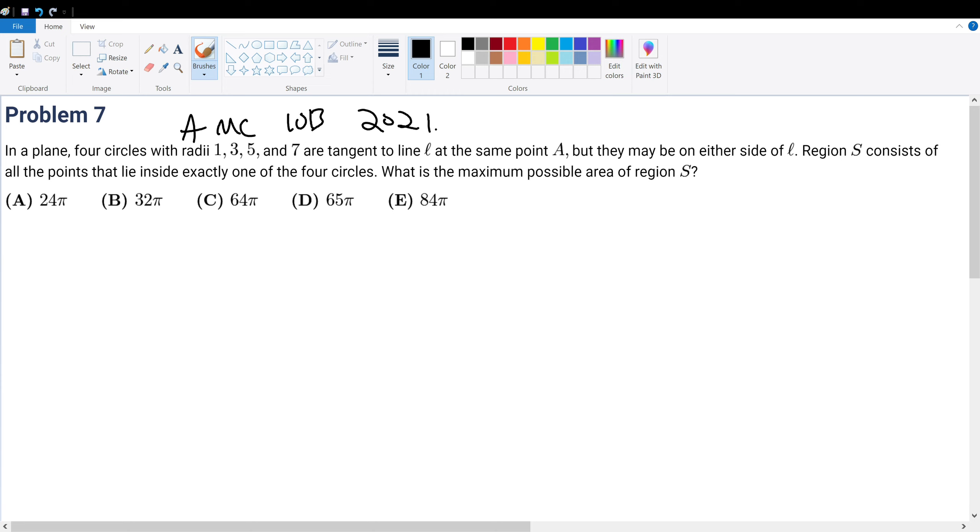AMC 10B 2021, problem 7. In a plane, four circles with radii are tangent to line L at the same point A, but they may be on either side. Region S consists of all the points that lie inside exactly one of the four circles. What is the maximum possible area of S?